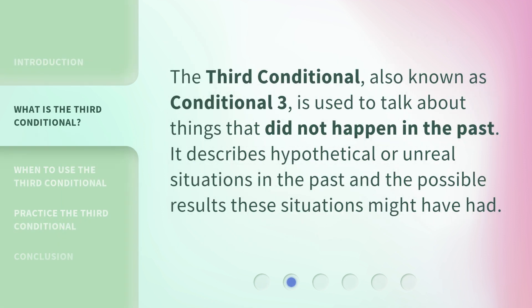The third conditional, also known as conditional three, is used to talk about things that did not happen in the past. It describes hypothetical or unreal situations in the past and the possible results these situations might have had.